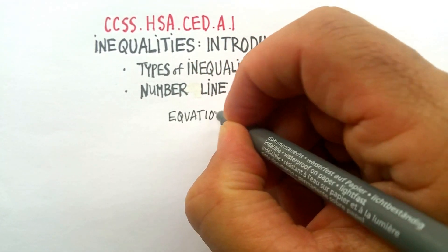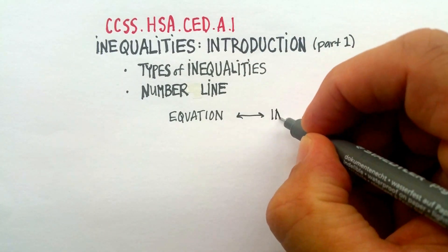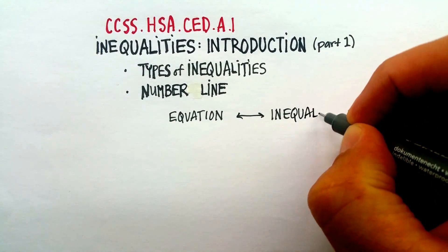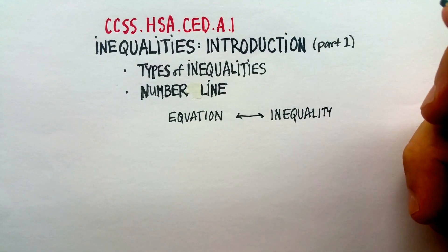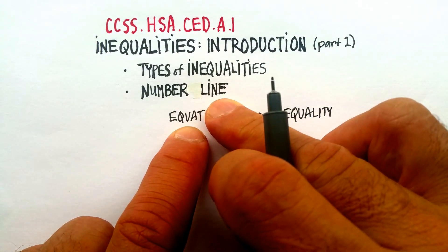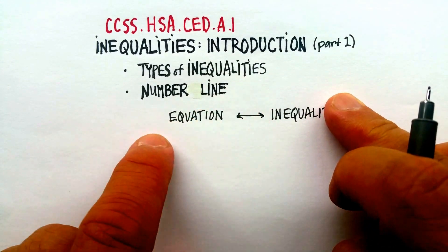Let me just write this in here real quickly: equation as being, if you want, the opposite end of an inequality. If you take these words apart you can kind of see what the difference is, right? An equation means something that's pretty much equal, and inequality is something that is not equal.